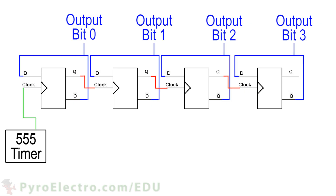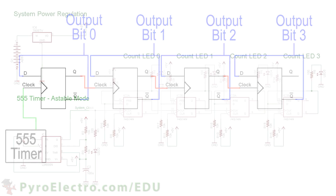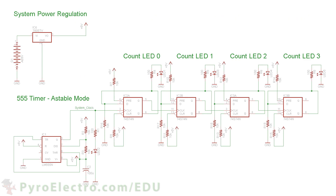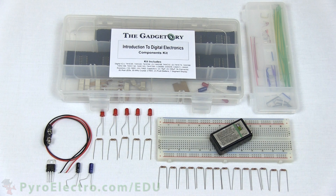Putting this design together into a schematic, we'll use a 555 timer in astable mode as the clock and 4 D flip-flops connected in the ripple counter configuration we just saw, with some LEDs to show the output count value. Here are all the parts for this experiment.